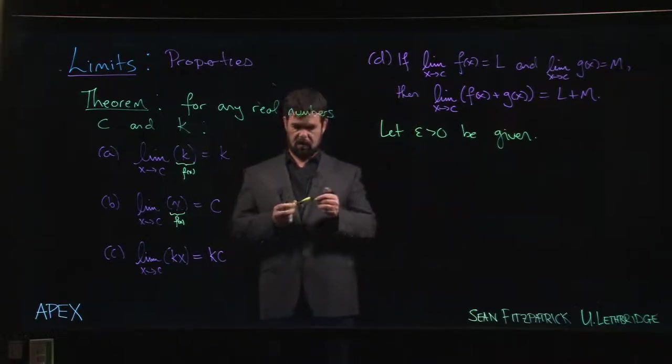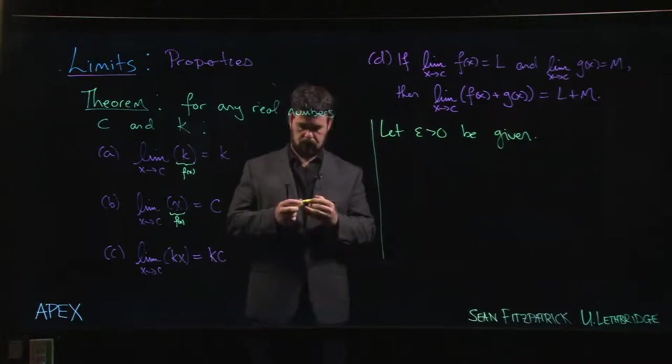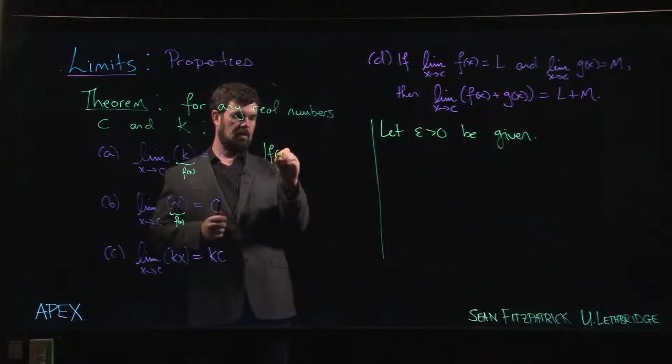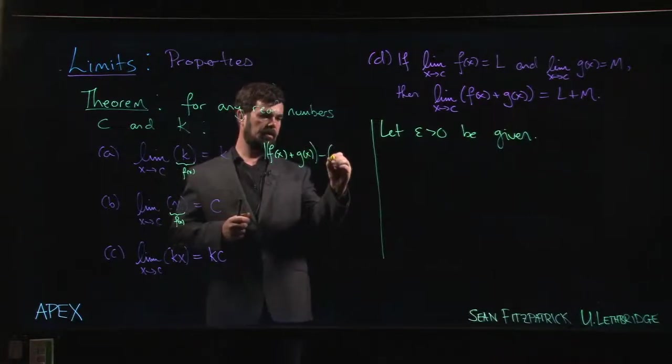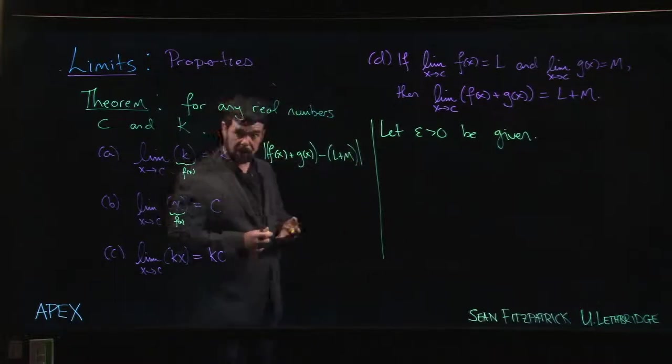Now we might do a little bit of scratch work over on the side. We say, suppose, what do I need? I want |f(x) + g(x) - L - M|, right? That's the thing that I want to make less than epsilon.